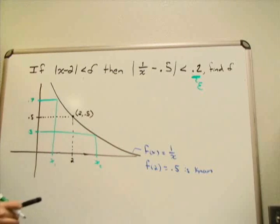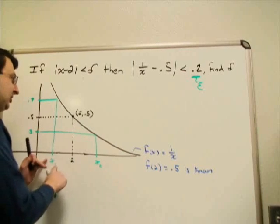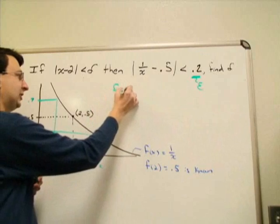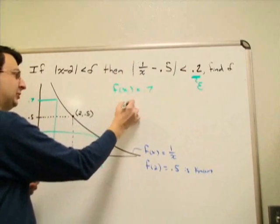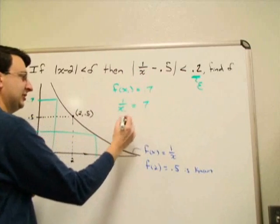For this example, it's not going to be that bad to solve for them. What value of x gives me an output of the function being 0.7? So f(x1) equals 0.7. My function is 1/x, so 1/x1 equals 0.7 or 7 tenths.